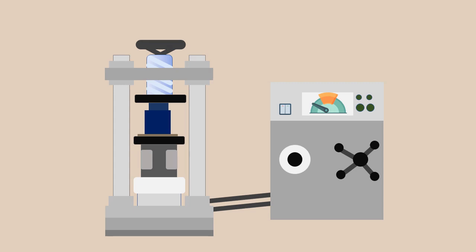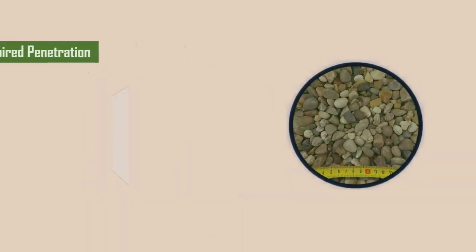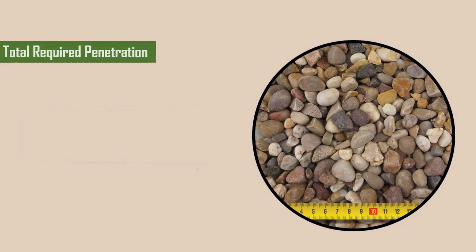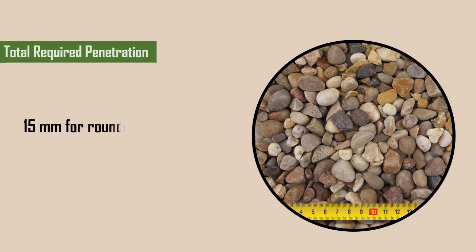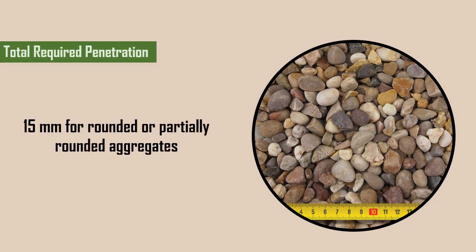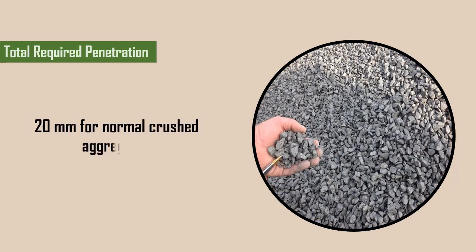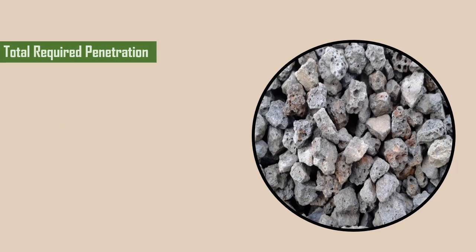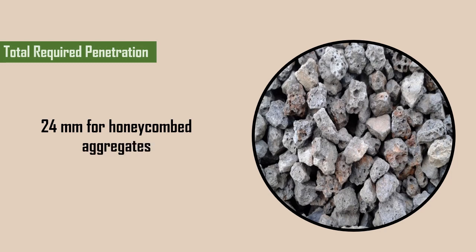The total required penetration depends on the type of aggregates: 15mm for rounded or partially rounded aggregates, 20mm for normal crushed aggregates, and 24mm for honeycombed aggregates like expanded shales, slags, etc.